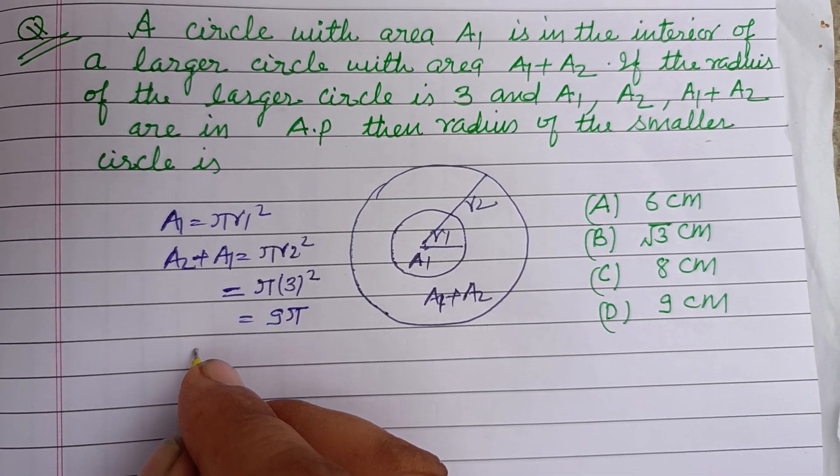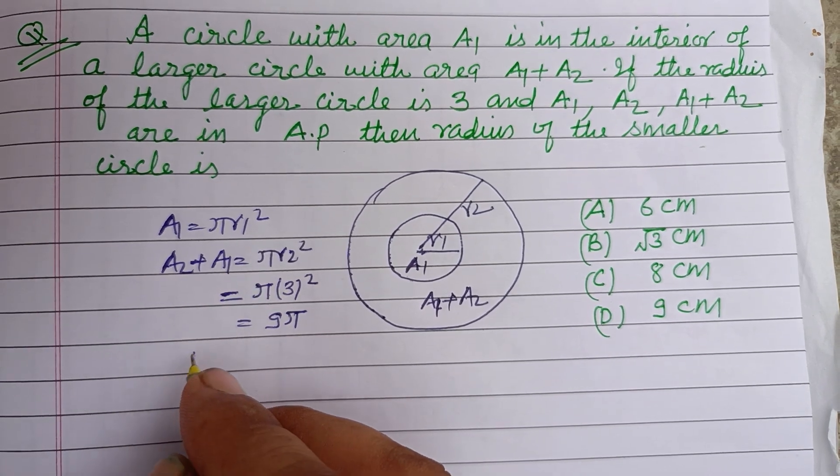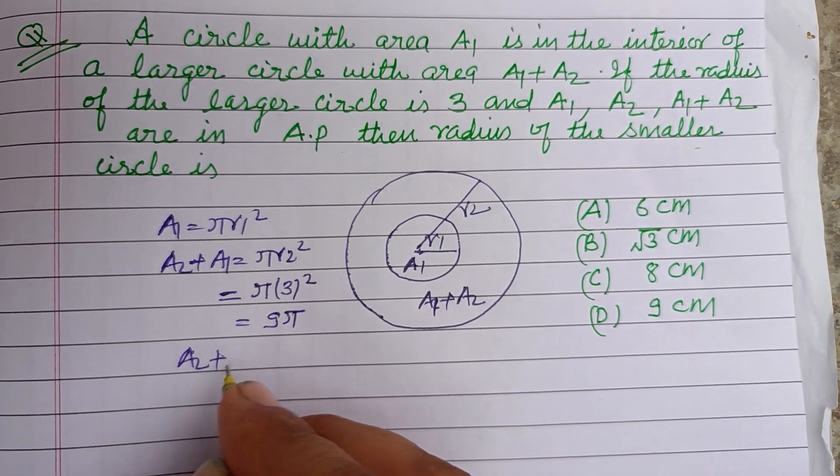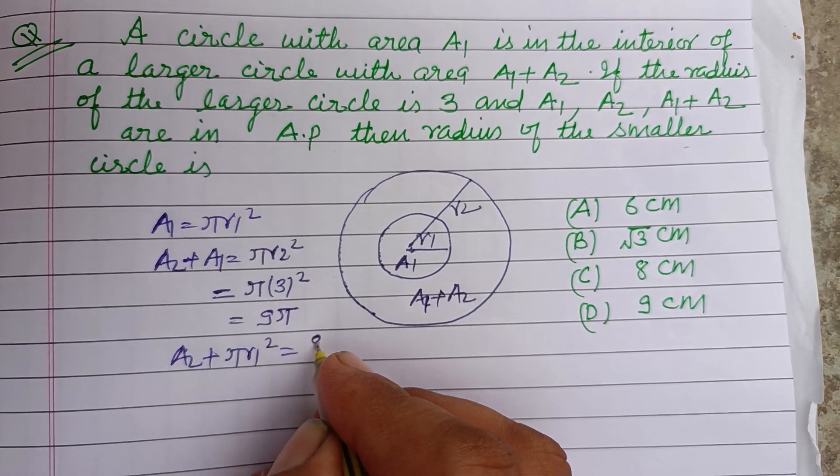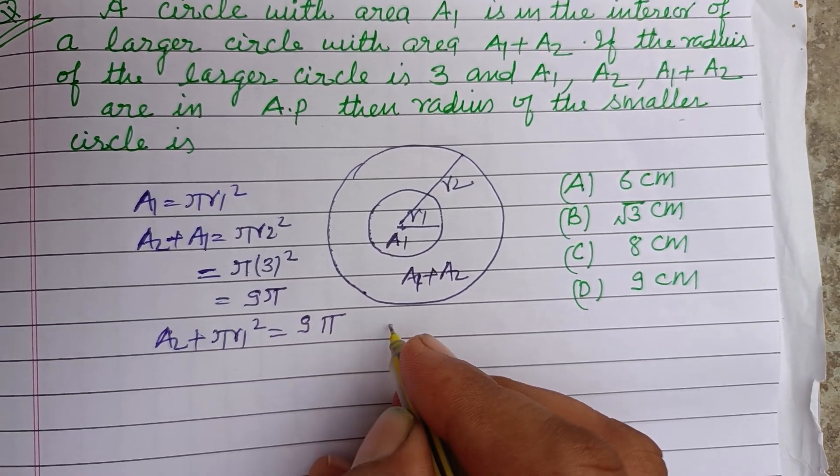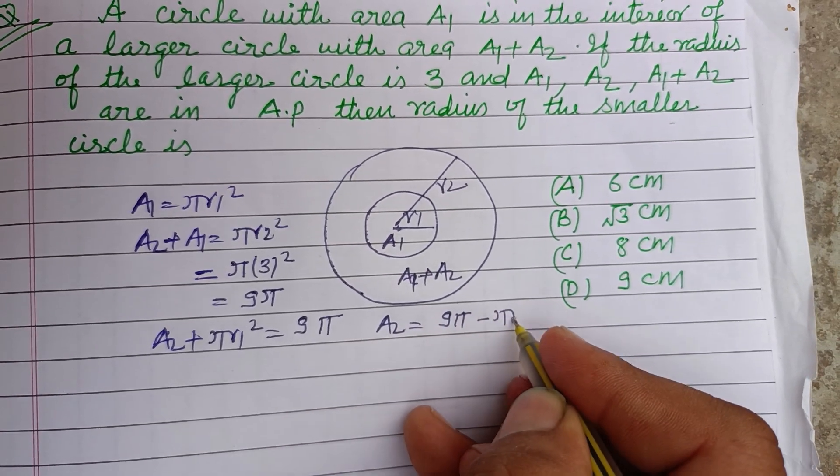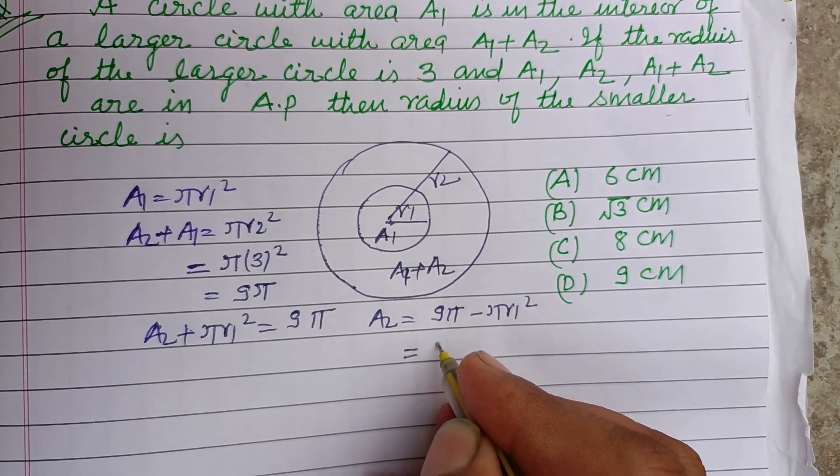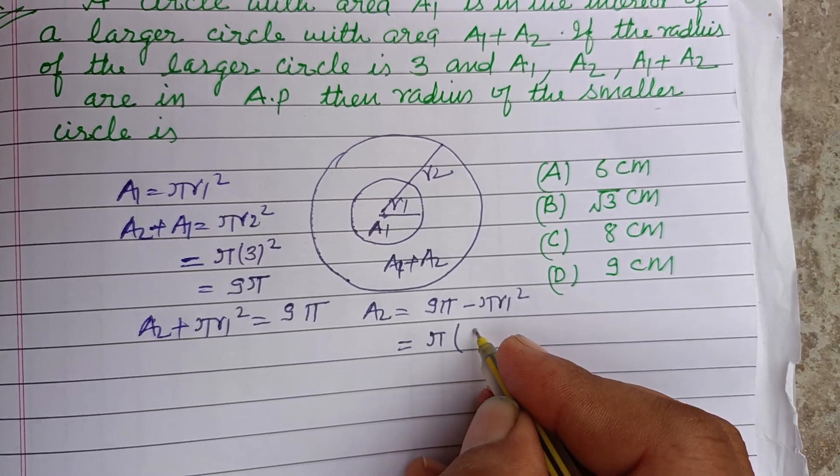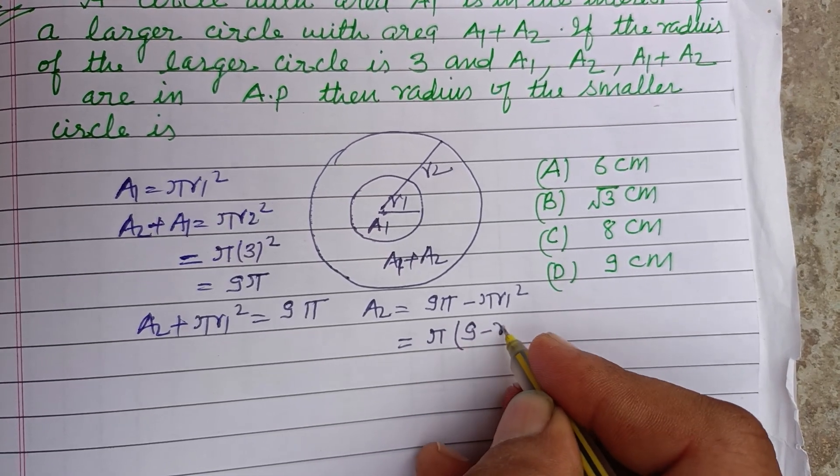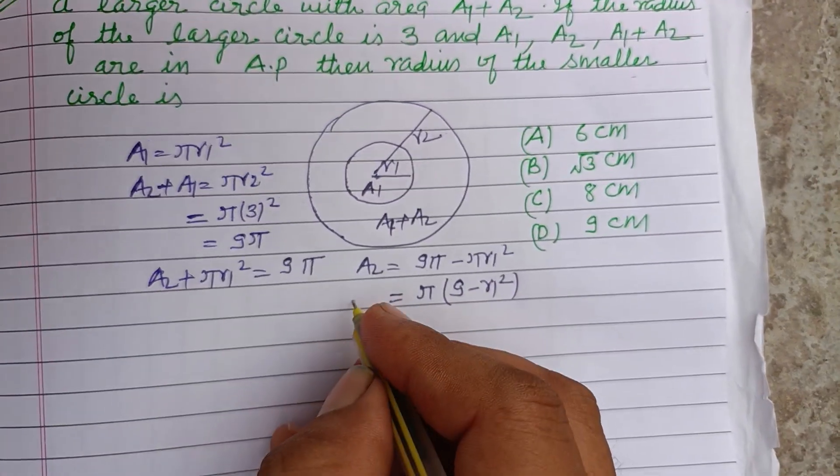When we put the value of A1 here, A2 plus pi r1 squared equals 9 pi. So A2 equals 9 pi minus pi r1 squared, or pi times 9 minus r1 squared. This is our A2.